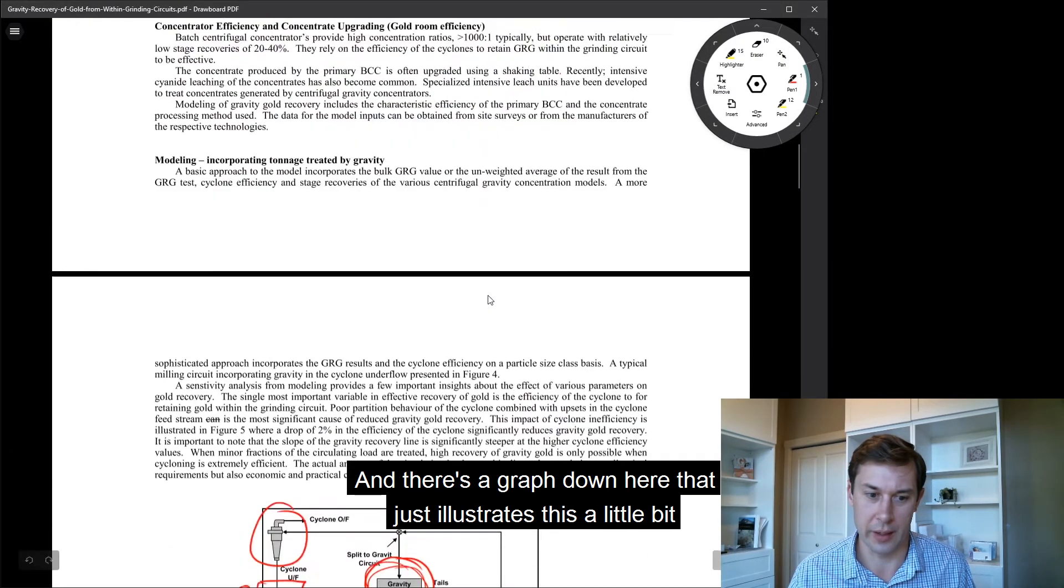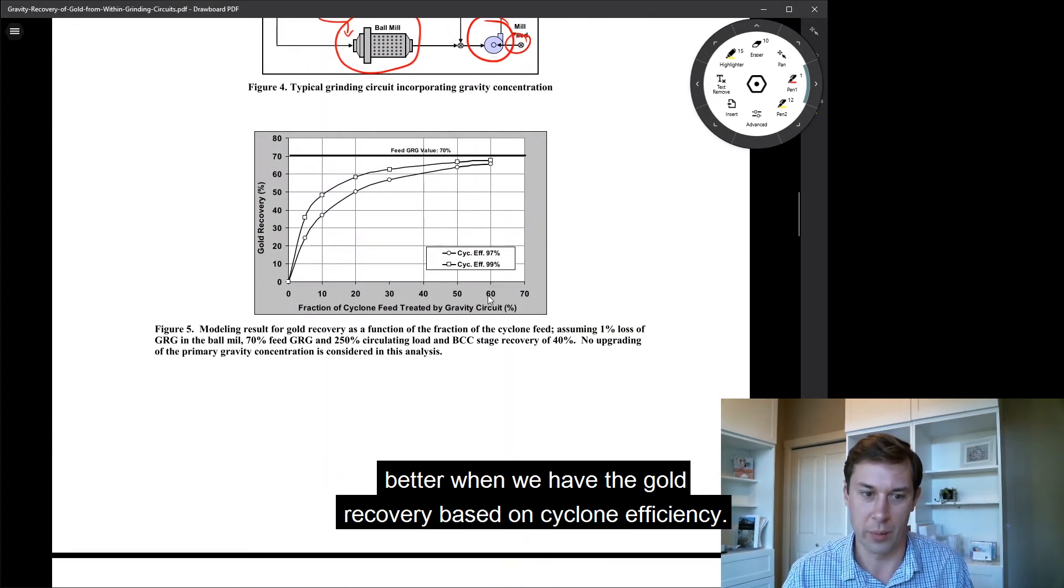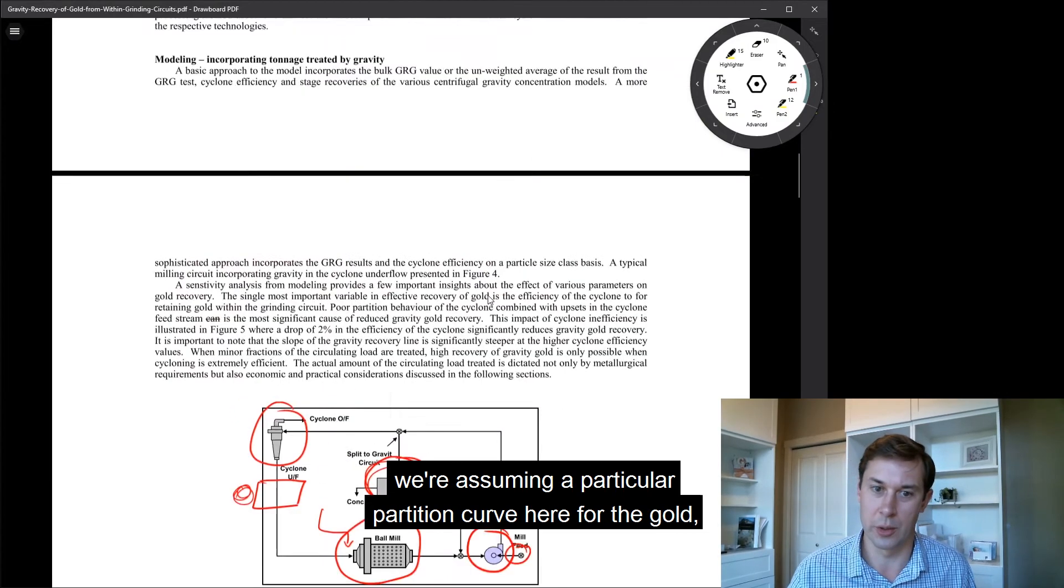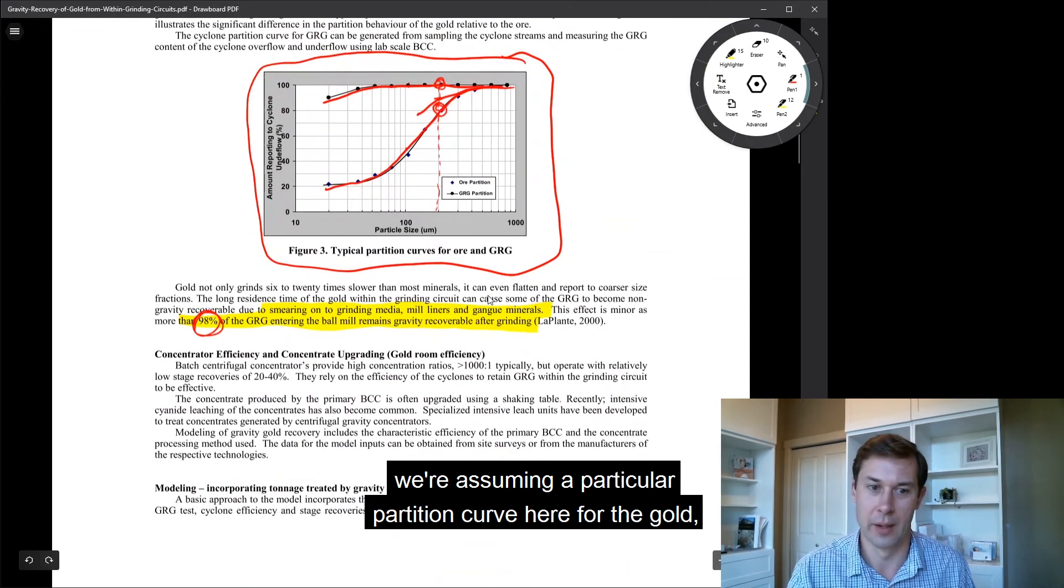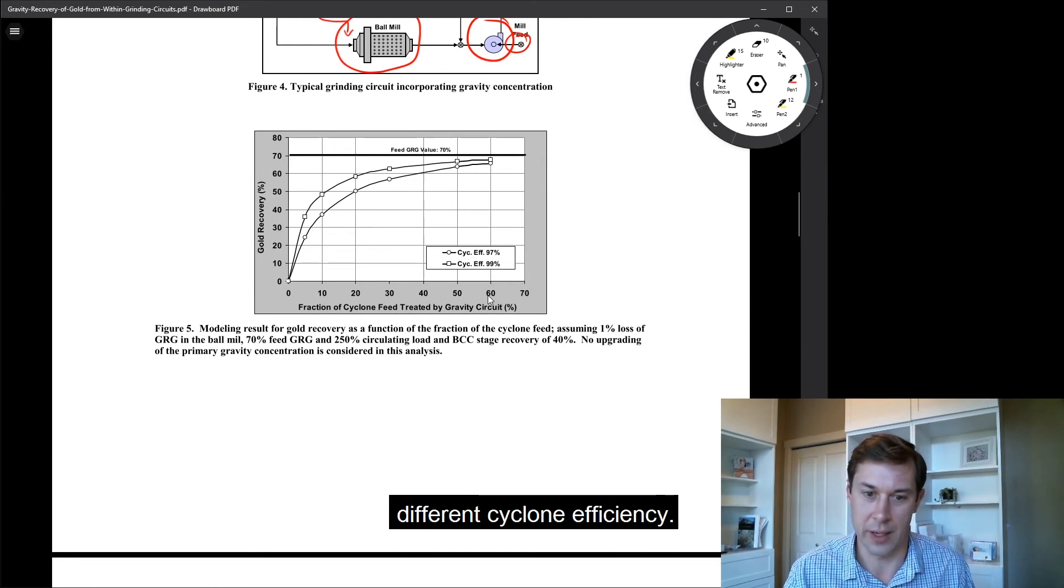And there's a graph down here that illustrates this a little bit better when we have the gold recovery based on cyclone efficiency. This is also modeled - we're assuming a particular partition curve here for the gold, and we can model that and see what happens at different cyclone efficiencies.